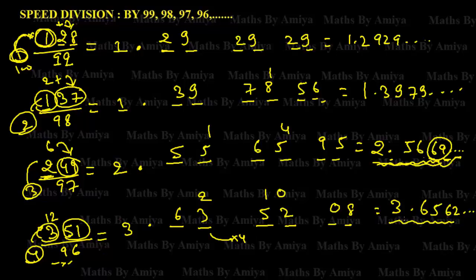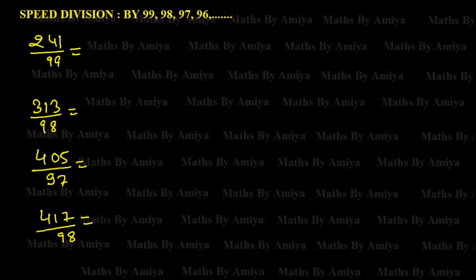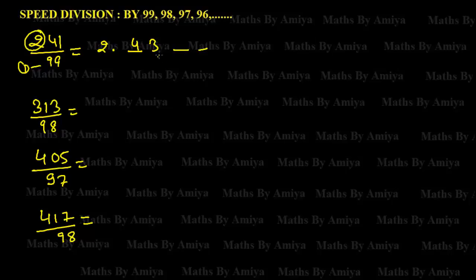For better practice, let's solve four more questions — solve till three decimal digits. For 241 divided by 99: the extra digit is 2, so it is 2 point something. Gap is 1: 1 × 2 = 2, add 41: 2 + 41 = 43. Multiply by 1: 43, then 43 again. The first three decimal digits are 2.434... This is also a complete recurring case.